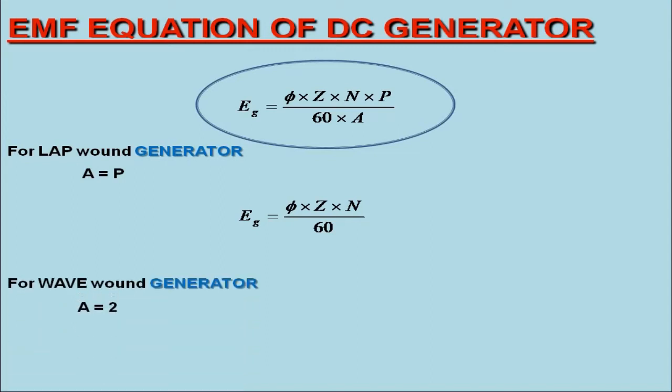On the other hand, for wave wound generator, the number of parallel paths is always 2. Therefore, the EMF equation for a wave wound generator can be expressed as φZNP/120.